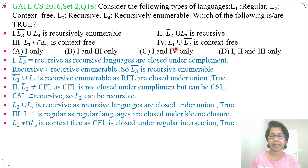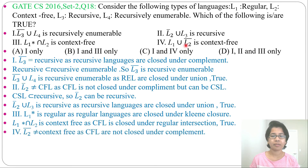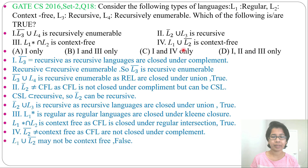Fourth statement: L1 union L2 complement. What is L2? L2 is context-free. Context-free complement is not context-free — it can be context-sensitive or recursive — but it is not context-free, as context-free language is not closed under complement. Now L1 is regular, and L2 complement is not context-free, so their union cannot be context-free. This is false.